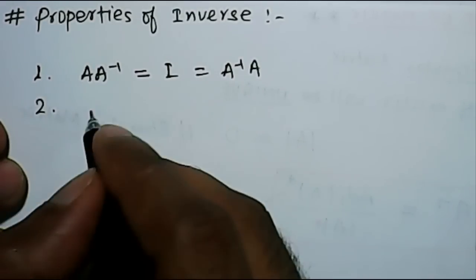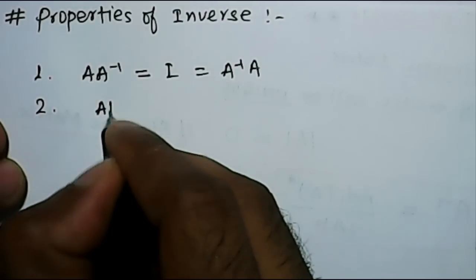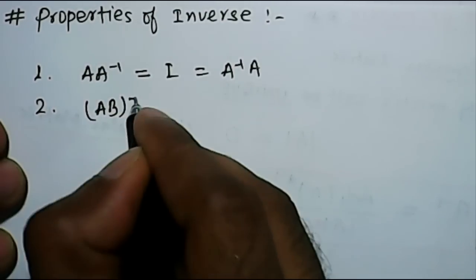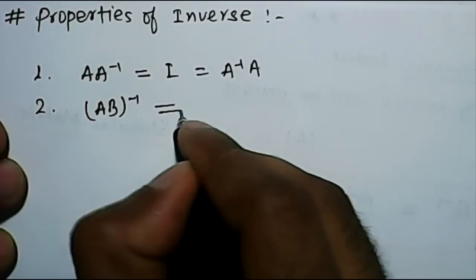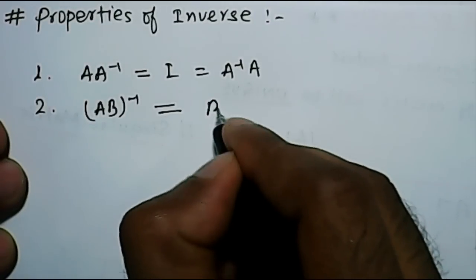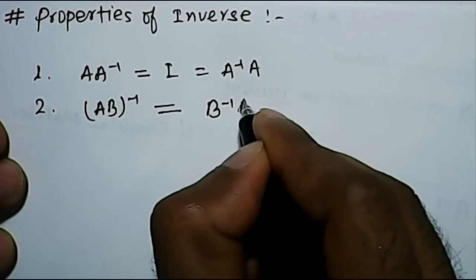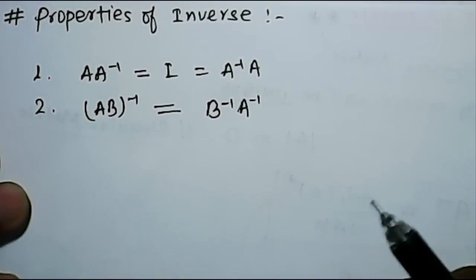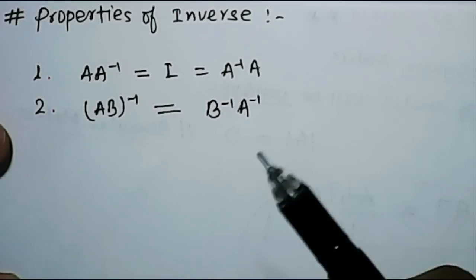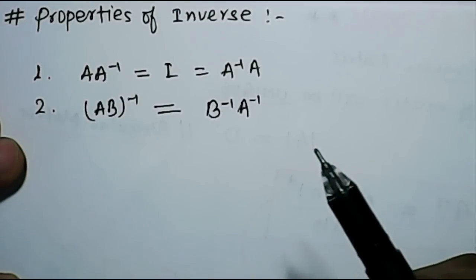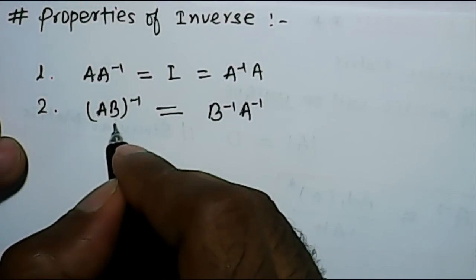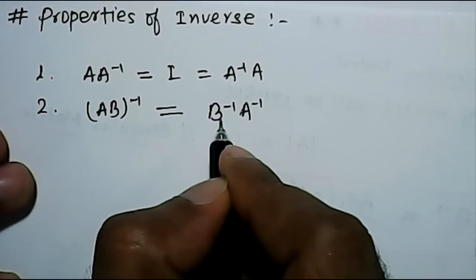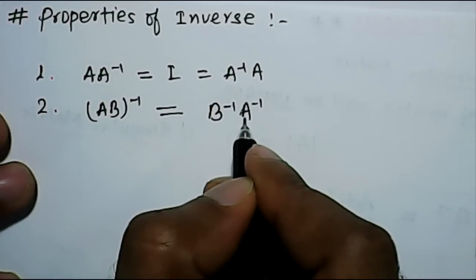Let's understand the important thing which is useful. If A into B whole inverse is there, then if we break this, it will be equal to B inverse into A inverse. Similar to transpose also, if we have AB inverse, it will be equal to B inverse A inverse.